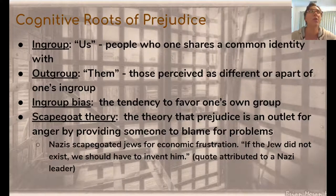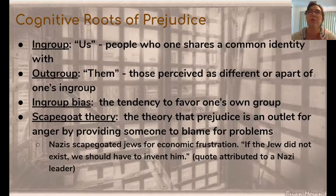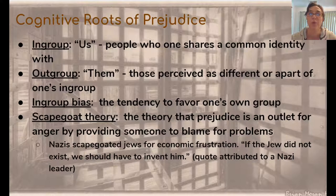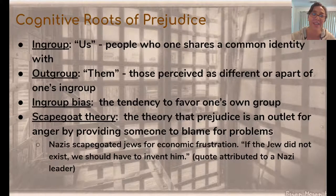Basically the belief among the Nazis was: if we can create this scapegoat, this group of people to blame for all the problems in Germany, then we can give everyone an outlet for this anger. So there's some theory that scapegoating is one reason why prejudice exists — people feel the need to have somebody to blame for their problems, and often who they blame is somebody in an out-group. You can even see it in other political movements — frequently political leaders will pick some group to be mad at and incite their followers to also be mad at that group, creating an outlet for anger and frustration, but what it ends up doing is creating prejudice and discrimination against that out-group.